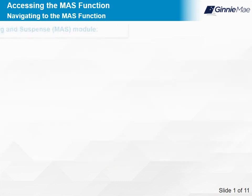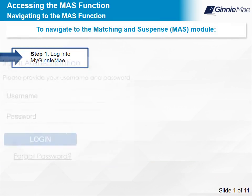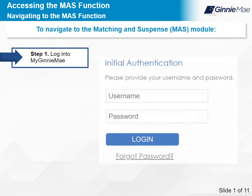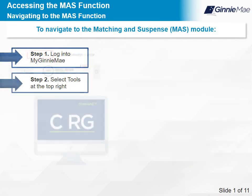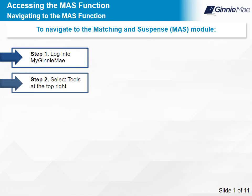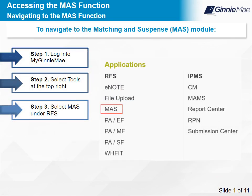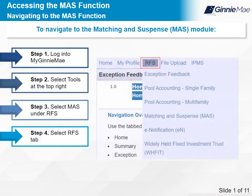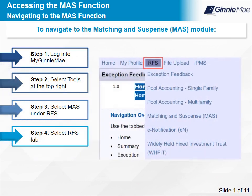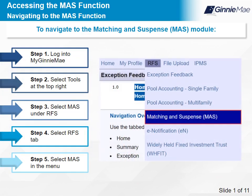To navigate to the Matching and Suspense Mass Module, take the following steps. First, log into MyGinnieMae. Second, select Tools at the top right of the interface. Third, select Mass under RFS in the Applications menu. Fourth, select the RFS tab. And lastly, select Mass in the drop-down menu.